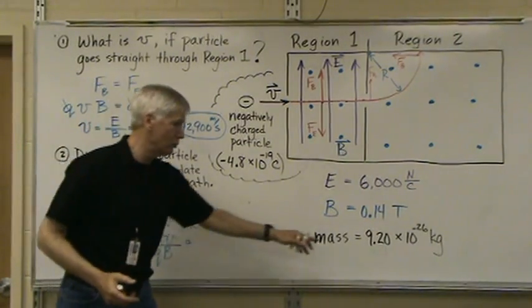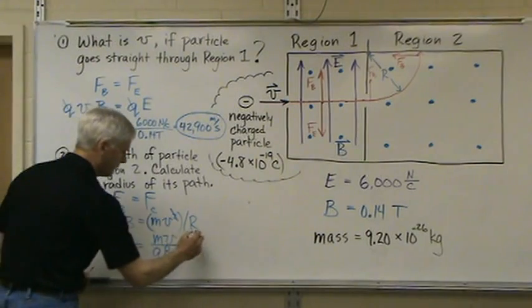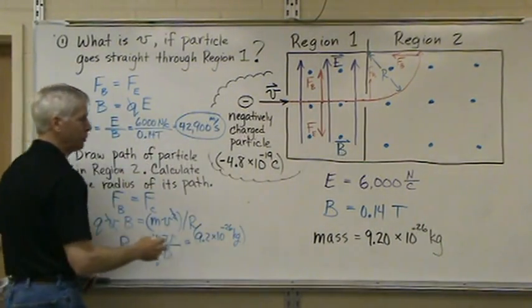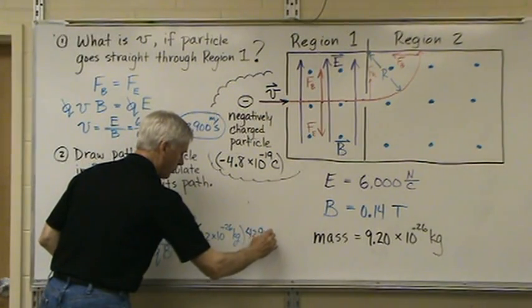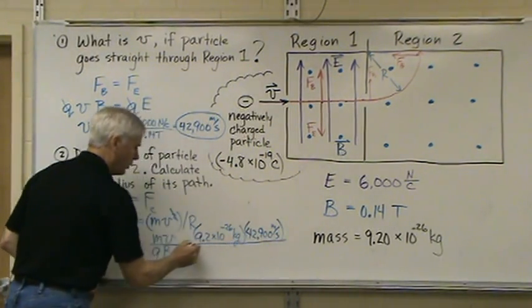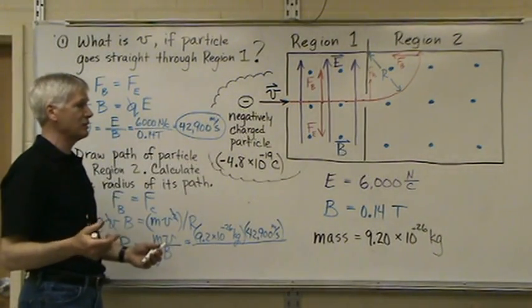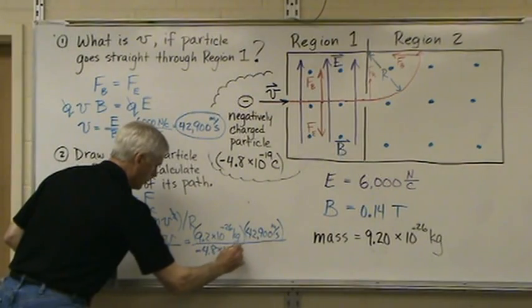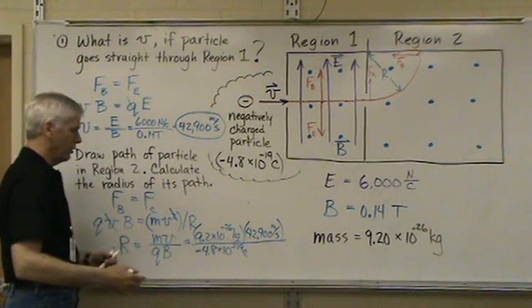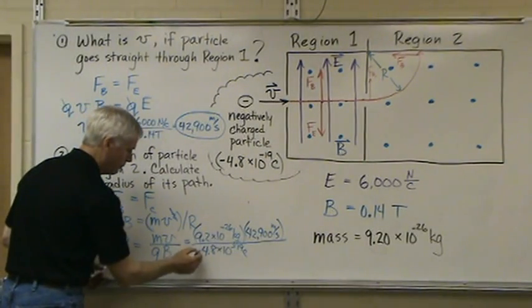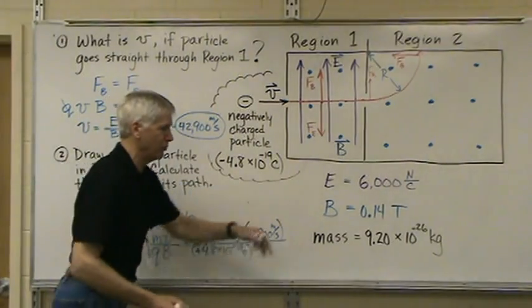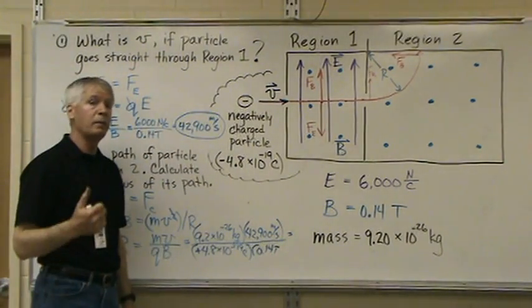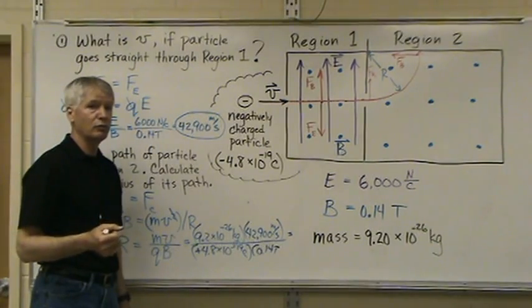And if we know the mass of the particle, which is given as 9.2 times 10 to the minus 26th, the velocity that we calculated up here. The charge is also given as negative 4.8 times 10 to the minus 19th Coulombs. So, it must have three electrons to it. And we're actually looking for the, we use the absolute value of the charge. So, that would just be a positive value. And the magnetic field is 0.14 Tesla. It's the same in both regions. So, once you do the math on that, we end up with a radius of 0.059 meters, which is 5.9 centimeters.